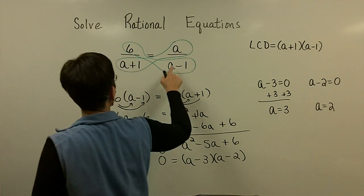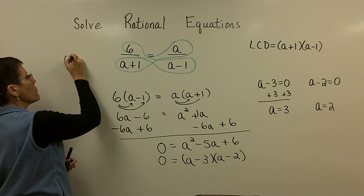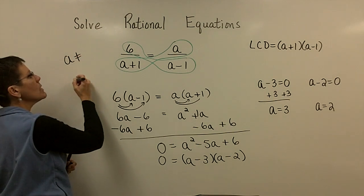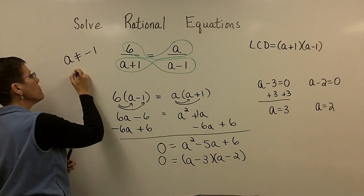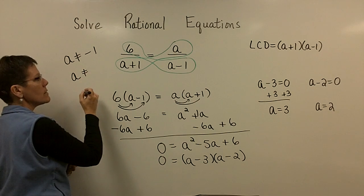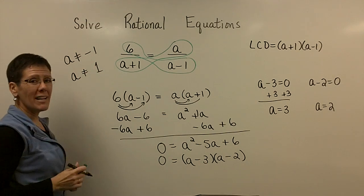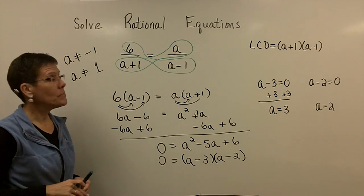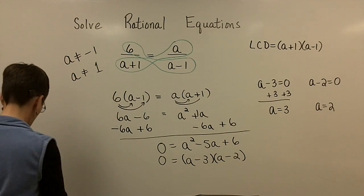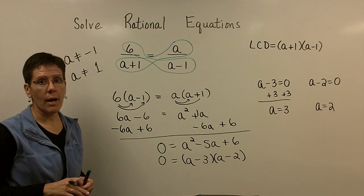Please remember, the restrictions on the domain of this problem, because of the first denominator, a cannot equal a negative 1. And because of that second denominator, a cannot equal a positive 1. A turned out to be 3 and 2. Those are the solutions for sure to that problem.